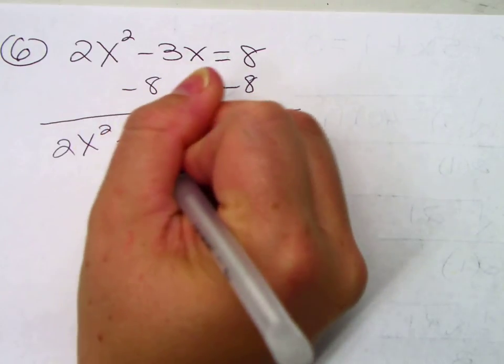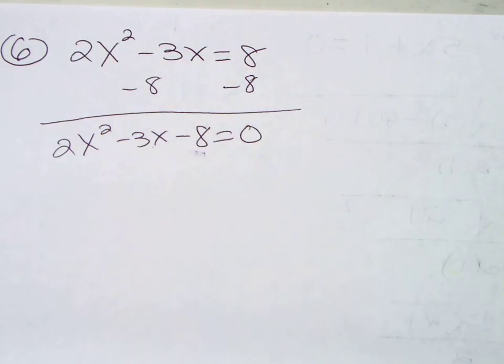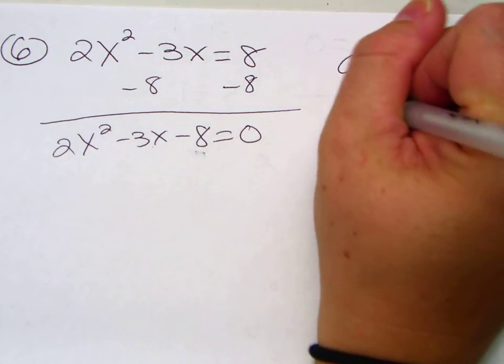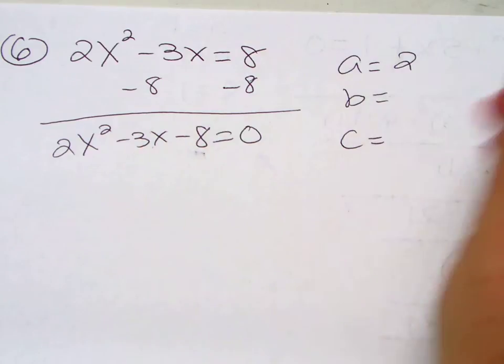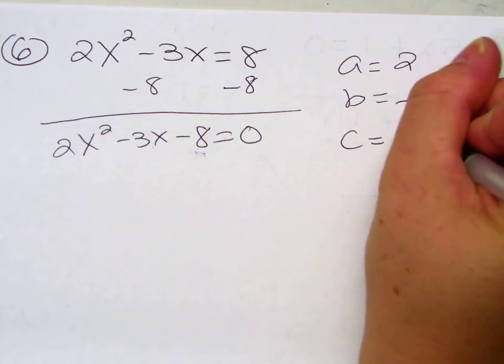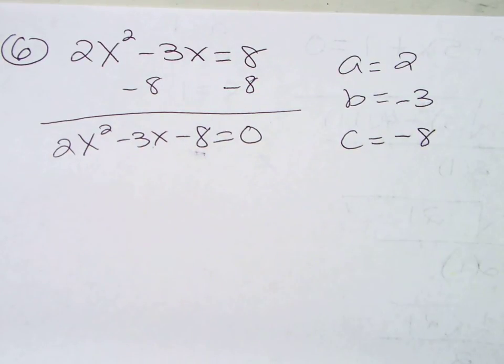2x squared minus 3x minus 8. You need a 0 on one side of the equation. What's A, B, and C? A is 2. B is negative 3. C is negative 8. Watch the signs.